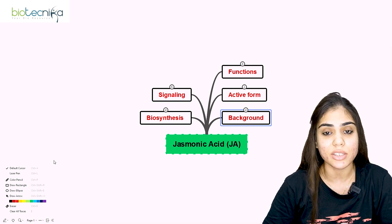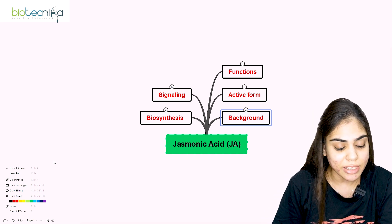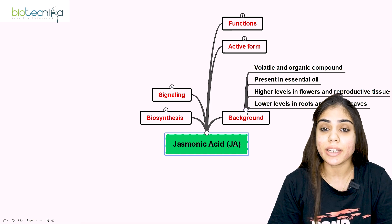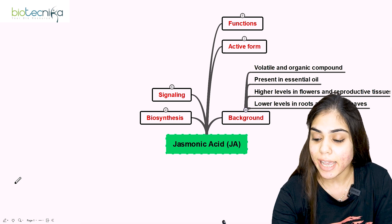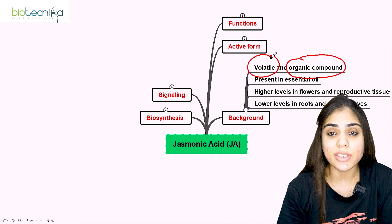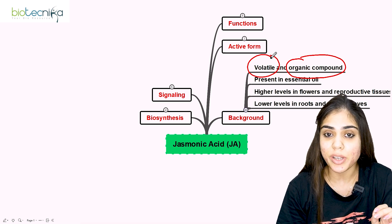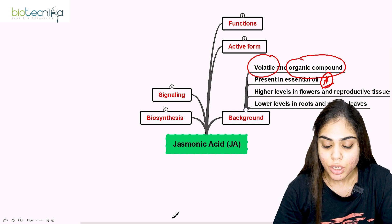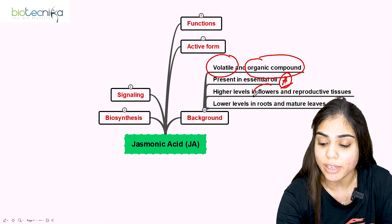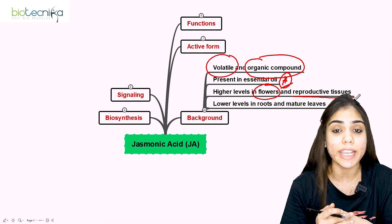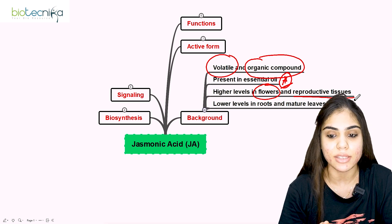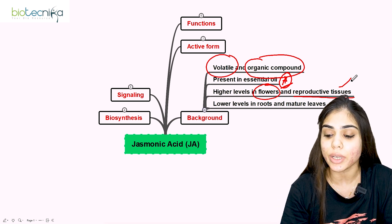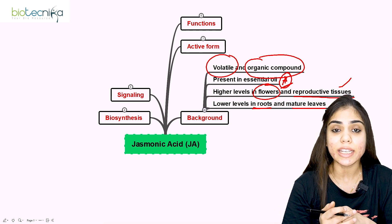Let's dive into jasmonic acid phytohormone. Jasmonic acid is a phytohormone found in the plant jasmine. It is an acidic compound — that is why it is called jasmonic acid — and it is volatile in nature, present in essential oils. Its distribution in the plant shows higher concentration in flowers as well as reproductive tissue, whereas it is found in lower concentration in roots as well as mature leaves.